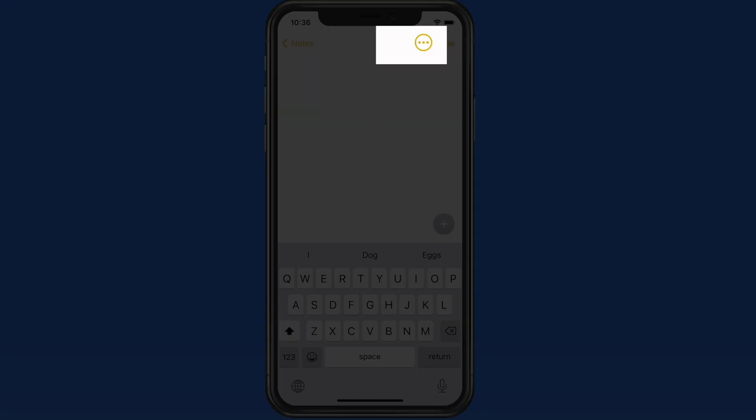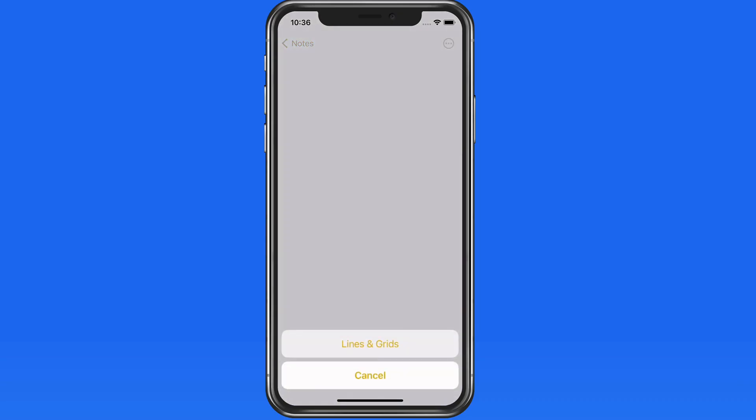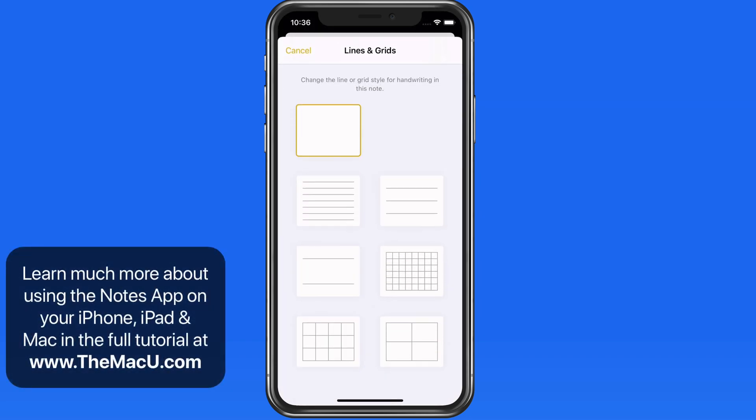After making a new note, if I tap the ellipsis button here, there's a lines and grids option presented. From here I can apply any of these styles into the note.